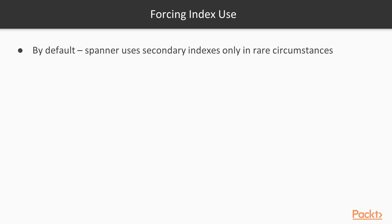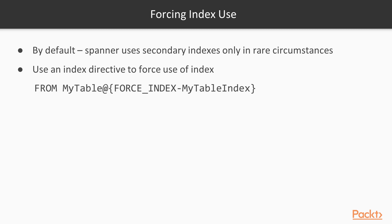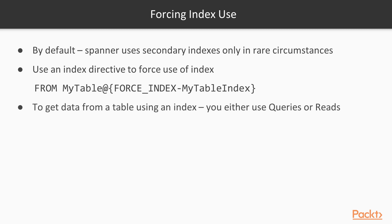Cloud Spanner's query engine will only automatically use indexes in rare circumstances when the query is fully covered by the index. So it is important to use a FORCE INDEX directive in the SQL statement to ensure Cloud Spanner looks up values from the index. An index directive is used to force an index — you must indicate the index name using an index directive in the SQL statement. For SQL queries using an index directive, Cloud Spanner's query processor might need to read columns required by the query but not stored in the index, and retrieves these columns using a join between the index and the base table.